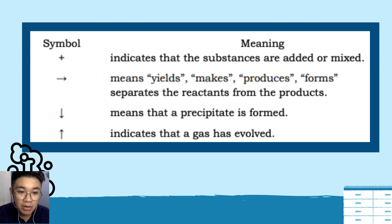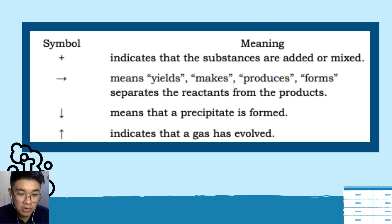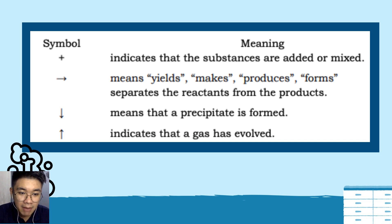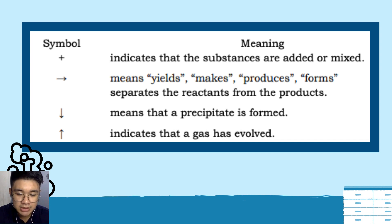A downward arrow means a precipitate is formed — a solid that settles at the bottom of a solution. An upward arrow indicates that a gas has evolved. The most important symbol is the rightward arrow, which is read as 'yields,' 'makes,' 'produces,' or 'forms.'